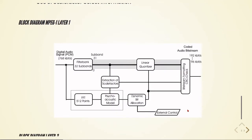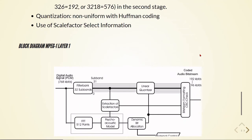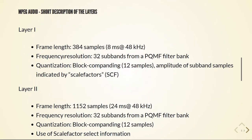Here is the block diagram for MPEG-1 layer 1, where we see the filter bank of 32 subbands. Here is the digital audio signal in PCM format. We have an FFT of 512 points just before the psychoacoustic model, then extraction of the scale factors, dynamic bit allocation, a linear quantizer, and the bitstream formatting, giving us the coded audio bitstream. Layer 1 uses just these 32 subbands from the PQMF filter bank.